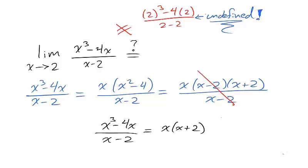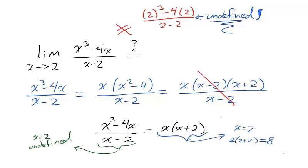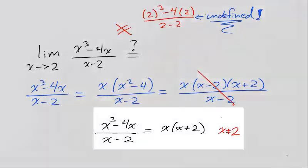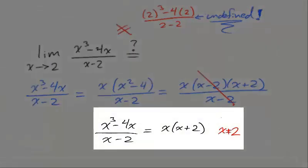But this is not a correct expression, as the right-hand side is defined at x equals 2. In fact, when x equals 2, it is 8, while the left-hand side is undefined at x equals 2. To correct this error, it is important to write that x can't be 2 in order for this equality to hold.